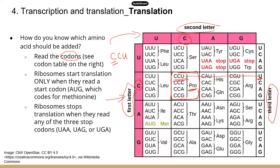Some codons are special — they don't correspond with amino acids. Instead, they have a stop signal, meaning these codons tell the ribosome to stop adding amino acids because that's the end of the gene sequence. And since we have a stop, we also have a beginning: the start codon is AUG. The start codon signifies the beginning of the sequence and also codes for a particular amino acid, methionine. So it serves two purposes.